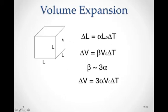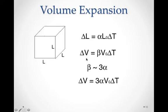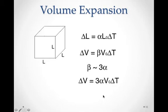Extending the concept to three dimensions gives us volume expansion. The change in volume equals β·V₀·ΔT, where β is the coefficient of volume expansion. Interestingly, β is approximately equal to three times the linear expansion coefficient α, which makes sense because volume expands in three dimensions. So volume expansion can also be written as 3α·V₀·ΔT.